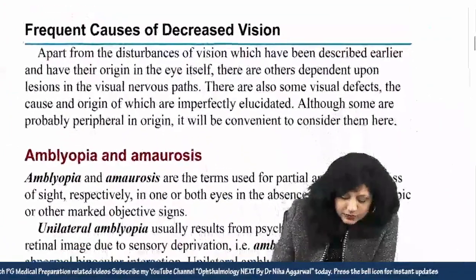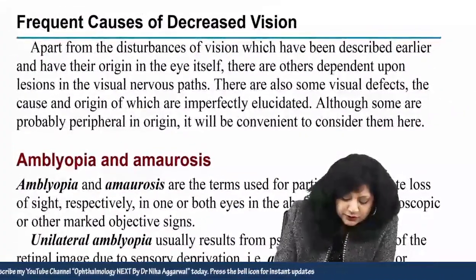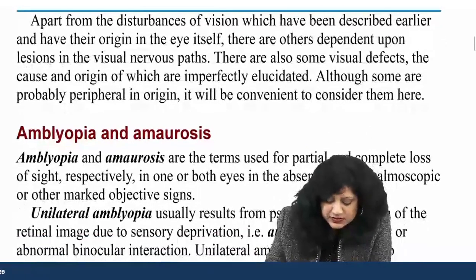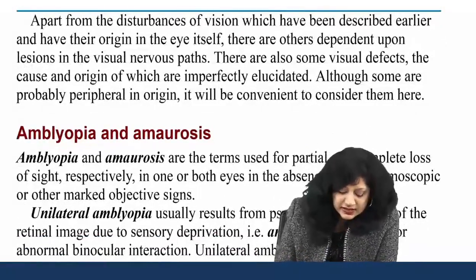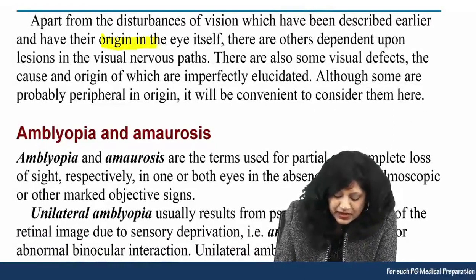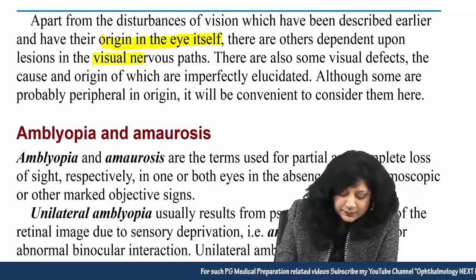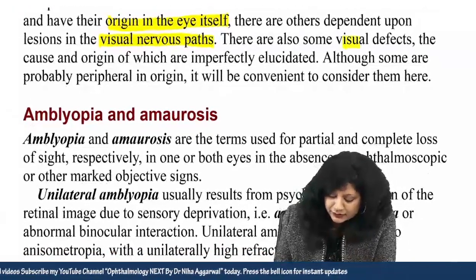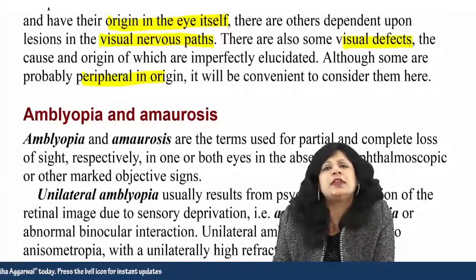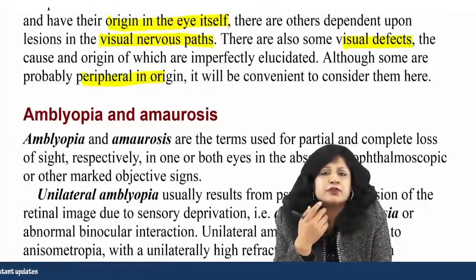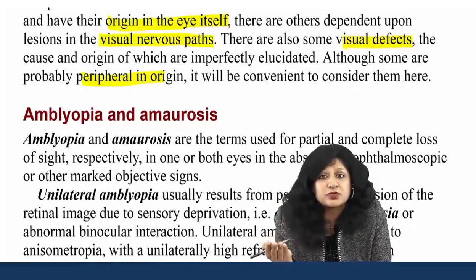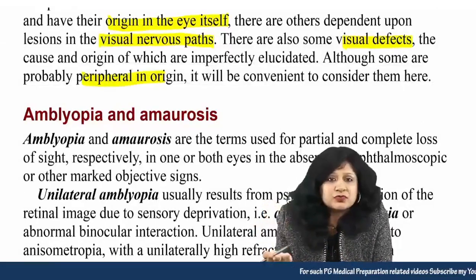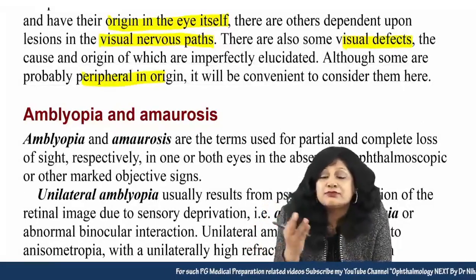Now coming to the frequent causes of decreased vision. Apart from disturbances originating in the eye itself, other causes can be dependent upon the nervous pathways. There are also certain visual field effects — some can be peripheral. There are so many causes of diminution of vision: it can be optic neuropathy, macular degeneration, cataract, cornea problems, visual field defects, or visual pathway defects.